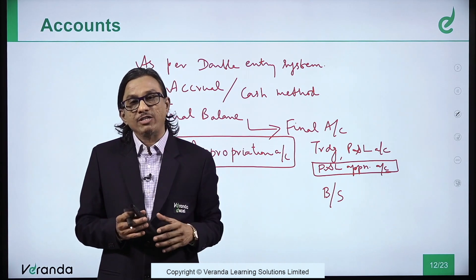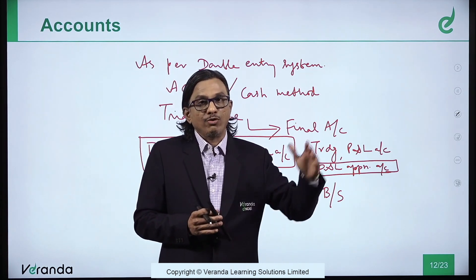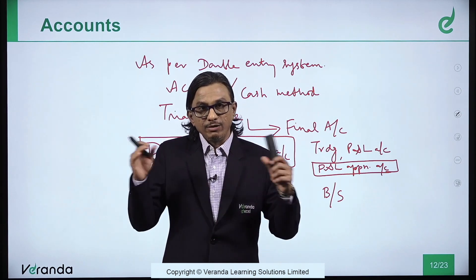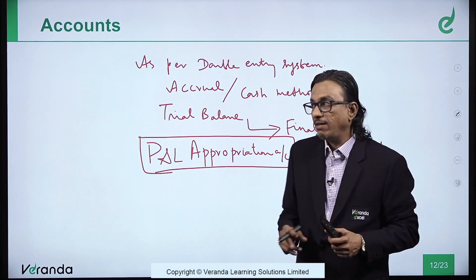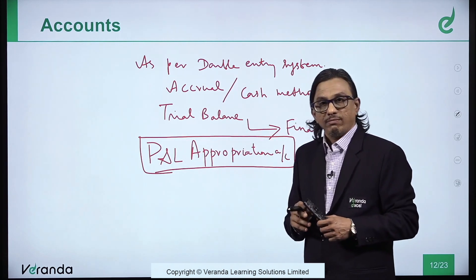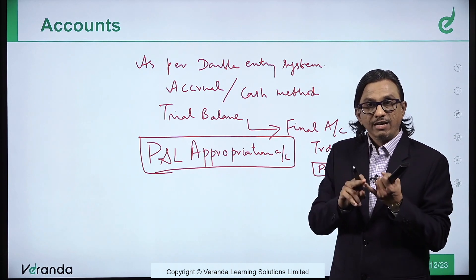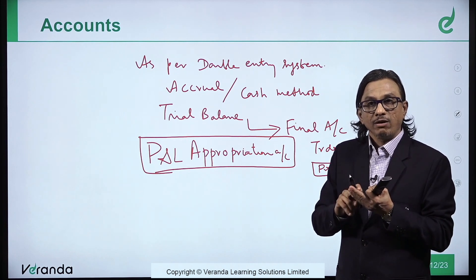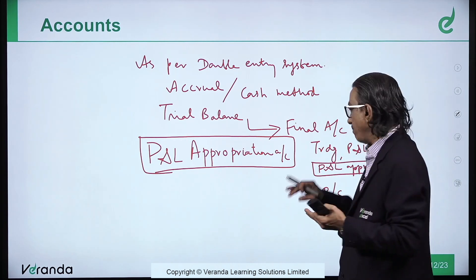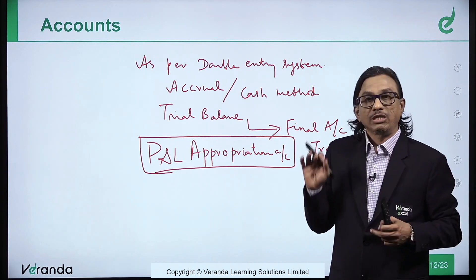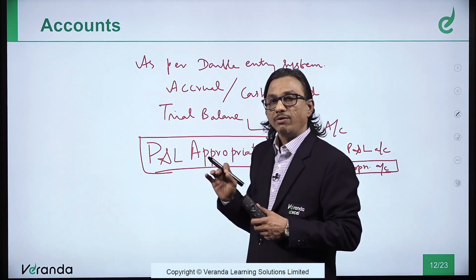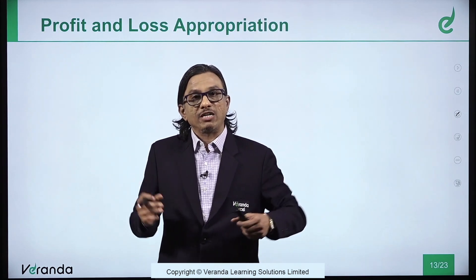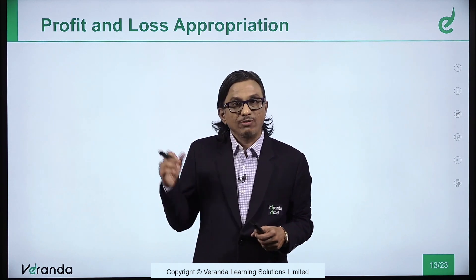Therefore, in a partnership: first you maintain books of account under double entry system, accrual or cash method. End of the year, you prepare the trial balance. Then from that, final accounts comprising trading account, profit and loss account, and profit and loss appropriation account, and then we prepare the balance sheet. This is a very important point to remember. What do we show in the P&L appropriation account? That is what we are going to learn now.